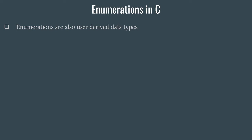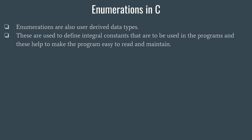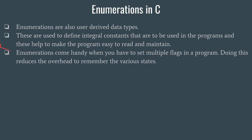Before going to the code, we will also discuss enumerations in C. Enumerations are user-defined derived data types. These are used to define integral constants that are to be used in programs, and they help make the program easy to maintain. Enumerations are analogous to macros, but slightly different.